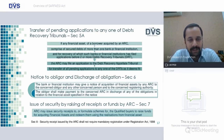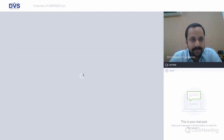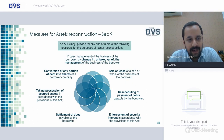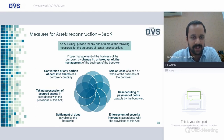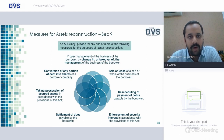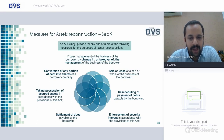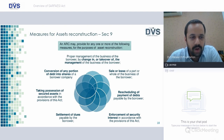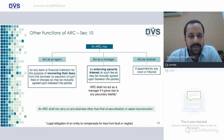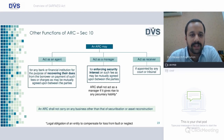Section 8 speaks about security receipts issued by ARC, which shall not require mandatory registration under the Registration Act 1908. Section 9 speaks about measures for asset reconstruction — ARC may provide one of the following services: proper management of the business of the borrower by changing or taking over the management; sale or lease of part or whole of the borrower's business; rescheduling of payment of debts payable by the borrower; enforcement of security interest; settlement of dues payable by the borrower; taking possession of secured assets; or conversion of any portion of debt into shares of the borrowing company. ARC may also act as agent, manager for enforcing security interest, or receiver if appointed by any court or tribunal.